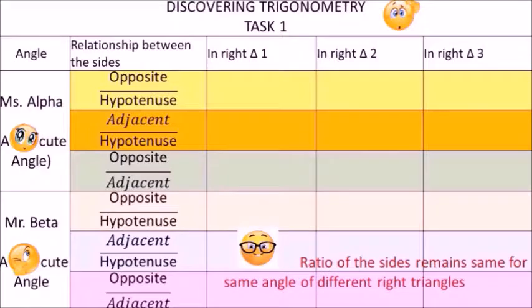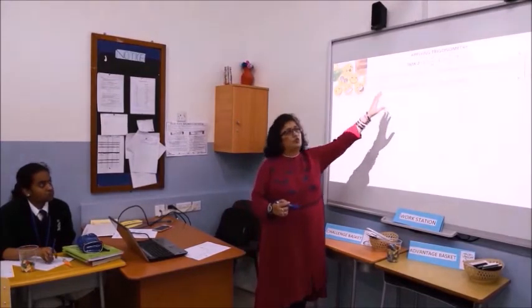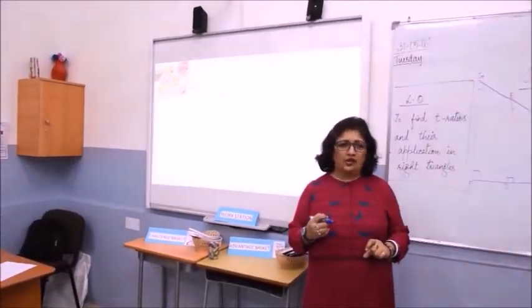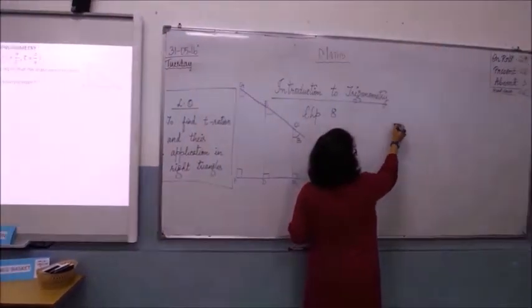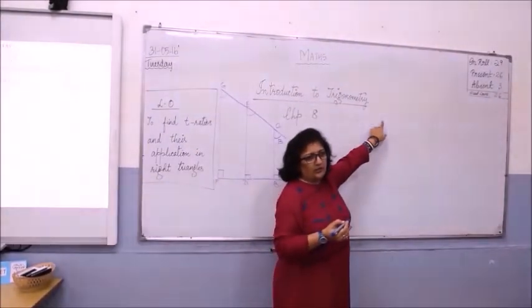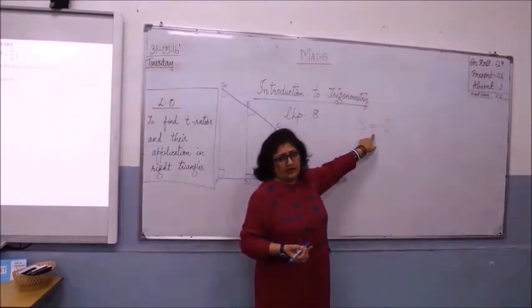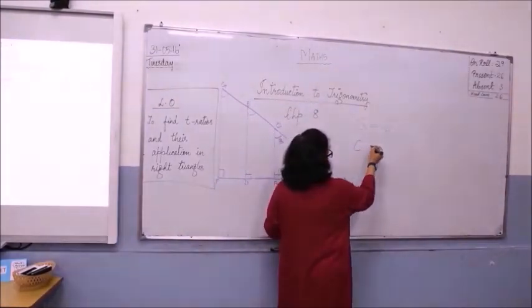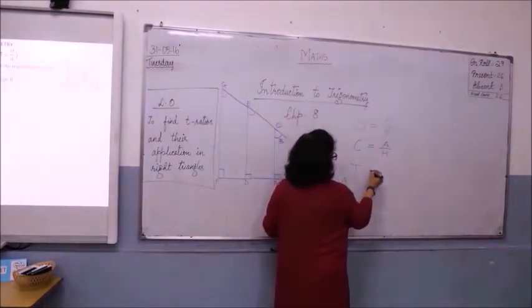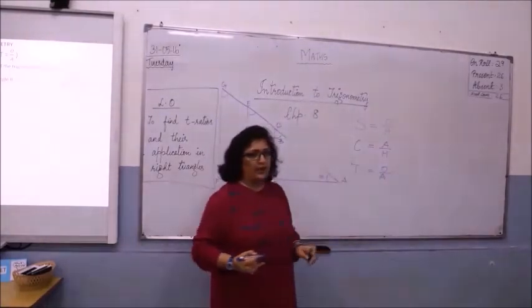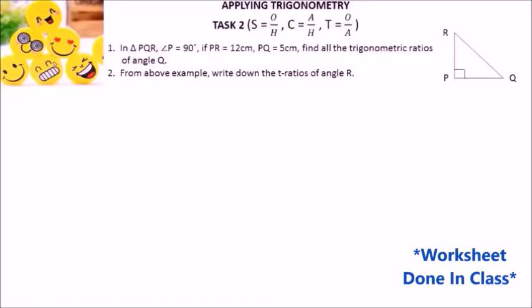Students, you must have observed after completion of task 1 that the ratio of the sides remains the same for the same angle of different right triangles. Alright girls, let's begin with task 2 where we are going to apply trigonometry. You have just learnt the relation of ratio of the sides to the angle — that is SOHCAHTOA. S stands for sine. Tell me the ratio: opposite by hypotenuse. So sine theta equals opposite to angle theta by hypotenuse. Cosine is adjacent by hypotenuse and tan is equal to opposite by adjacent. Start applying the T-ratio.